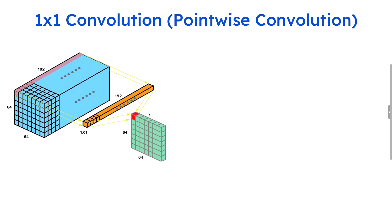Generally these 1x1 convolution filters are known as a bottleneck. It is also known as point-wise convolution, and it is also known as channel-wise convolution. These are the various names by which 1x1 convolution is known. Let's evaluate the advantages of doing this 1x1 convolution.